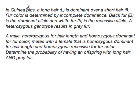When you read a word problem and you notice that there are two traits being tracked, that should automatically tell you that you need to use a dihybrid cross to make predictions of how those traits are going to be inherited by their offspring. As you read the problem, you need to pick out the key parts and make notes. We're also going to want to figure out the genotype and phenotype of the parents. So let's go ahead and work on this problem together.